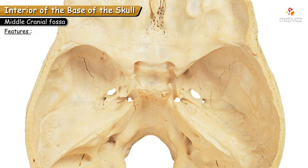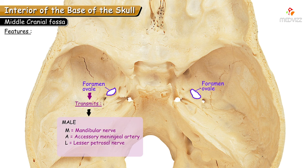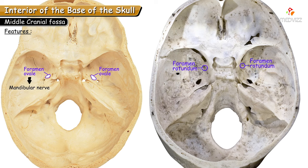The next prominently seen foramen is the foramen ovale, which transmits four structures remembered by the mnemonic MALE: M — mandibular nerve; A — accessory meningeal artery; L — lesser petrosal nerve; E — emissary vein. Thus, three branches of the trigeminal nerve pass through separate foramina: the mandibular nerve through foramen ovale, the maxillary nerve through foramen rotundum, and branches of the ophthalmic nerve through the superior orbital fissure.